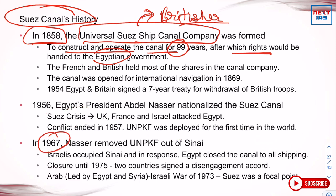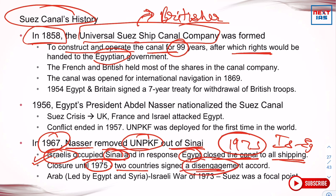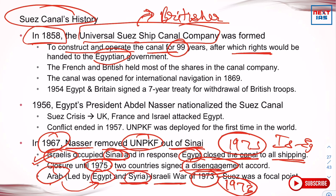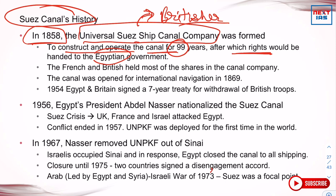In 1967, Egypt's President removed the UN peacekeeping force from the Sinai Peninsula, leading to another crisis in which Israel occupied the Sinai Peninsula. In response, Egypt closed the canal to all shipping. This closure continued until 1975. During this period the Arab-Israel War of 1973 also took place. Finally in 1975, Israel and Egypt signed a disengagement agreement, normalizing the situation in the Suez Canal.